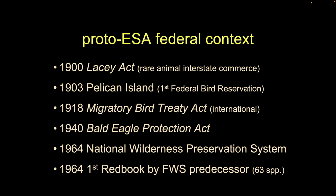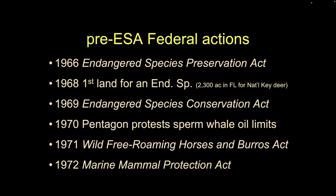Then we get to the 1960s and momentum is really picking up. People are saying we've got to do something. We have Rachel Carson, DDT, all this awareness. We're really worried. So we have the first generation of what's called the red book by the U.S. Fish and Wildlife Service — essentially like an endangered species list. The very first version of 1964 lists 63 species that are becoming very scarce or in danger of disappearing from the planet.